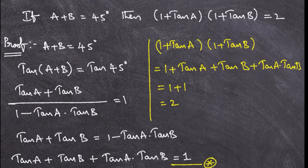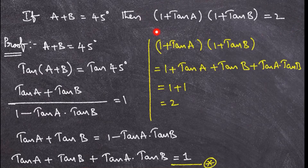So the conclusion and trick is: whenever you see a plus b is 45 degrees, then (1 + tan a)(1 + tan b) equals 2.